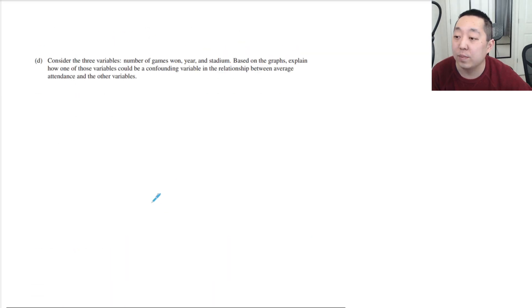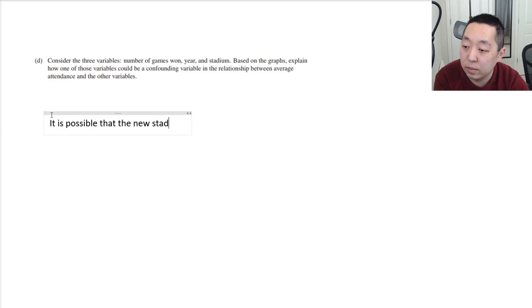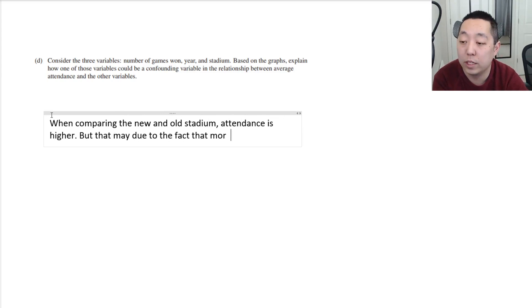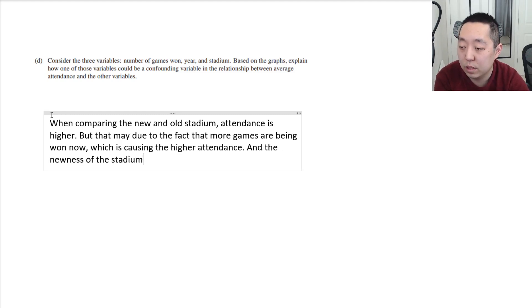So I would say that it is possible that when comparing the new and old stadium, attendance is higher, but that may be due to the fact that more games are being won now, which is resulting in, which is causing the higher attendance. And the newness of the stadium is just a coincidence. That's how we could establish that as a confounding variable.